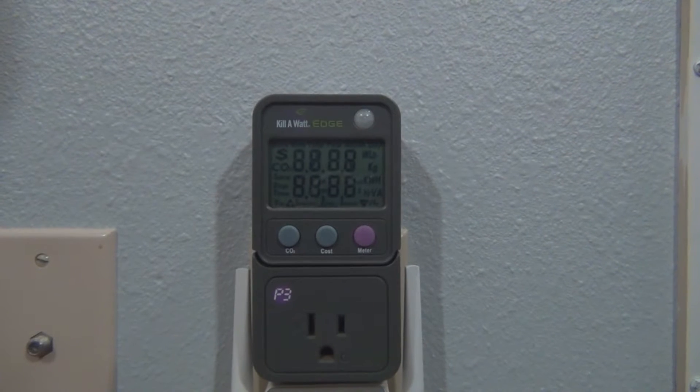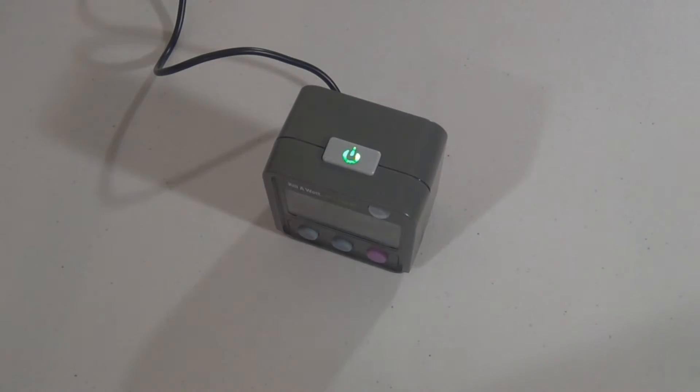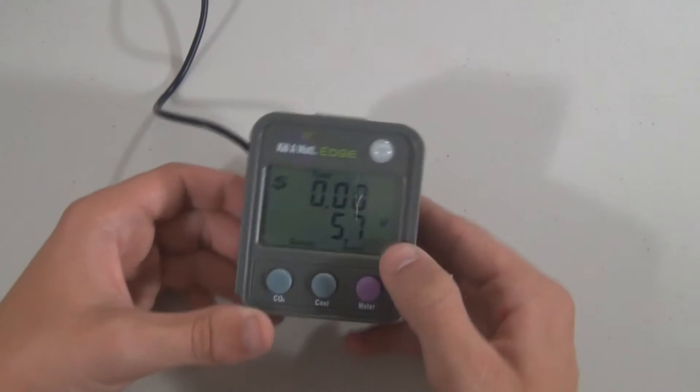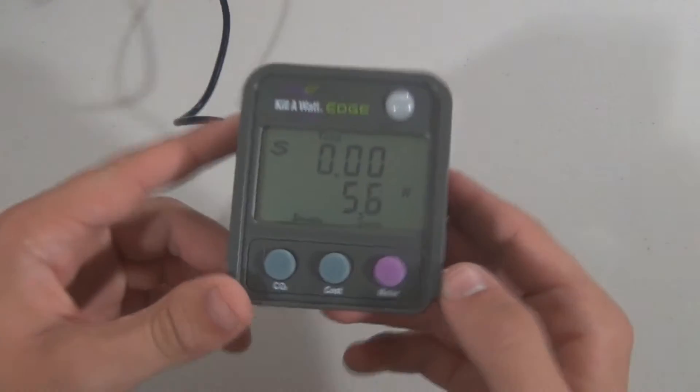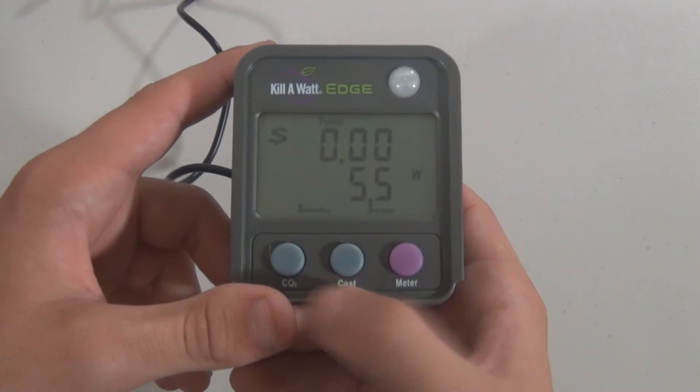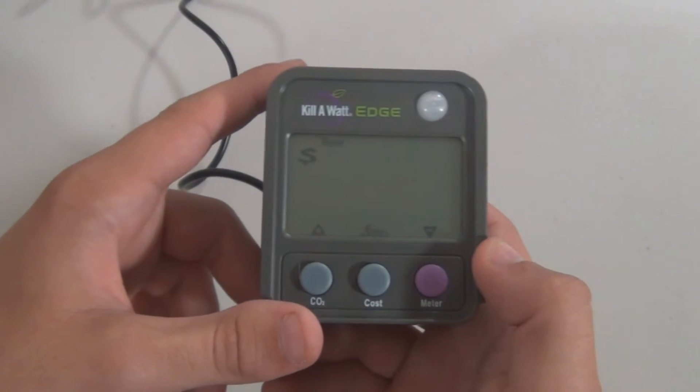To begin, let's first talk about how to set the rate. This is probably the most important setting, as this is what will allow you to calculate exactly how much money you are dumping into your devices to help you save monthly. The average person in the United States pays around 12 cents per kilowatt, so that's what we will be setting today. To set the rate, just hold the cost button for 3 seconds, and then use the meter button for down, and the CO2 button for up. After that, you're good to go.